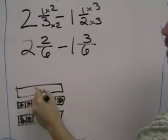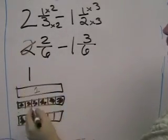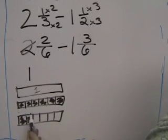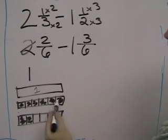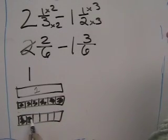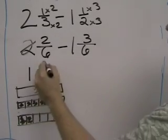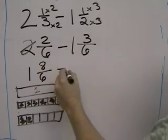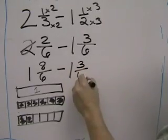we now only have 1 whole. And instead of having 2 sixths, we now have 6 plus 2, which is 8 sixths. So we now have 8 sixths, subtract 1 and 3 sixths.